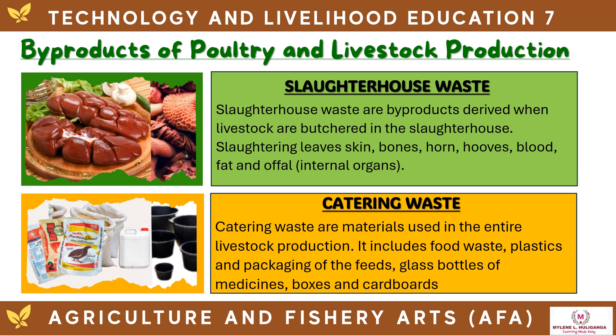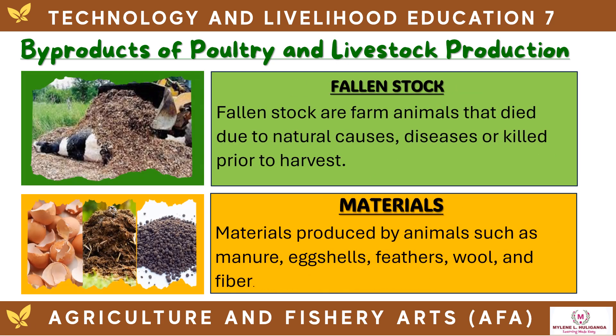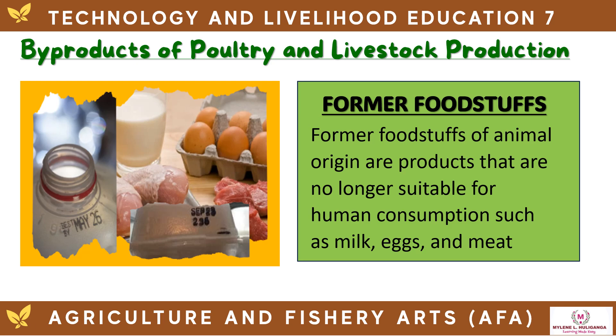Catering waste includes materials used in the entire livestock production process, such as food waste, plastics and packaging of feeds, glass bottles of medicines, and boxes and cardboards. Fallen stock are farm animals that died due to natural causes, diseases, or were killed prior to harvest. Materials produced by animals include manure, eggshells, feathers, wool, and fiber. Former foodstuffs are products of animal origin no longer suitable for human consumption, such as milk, eggs, and meat.